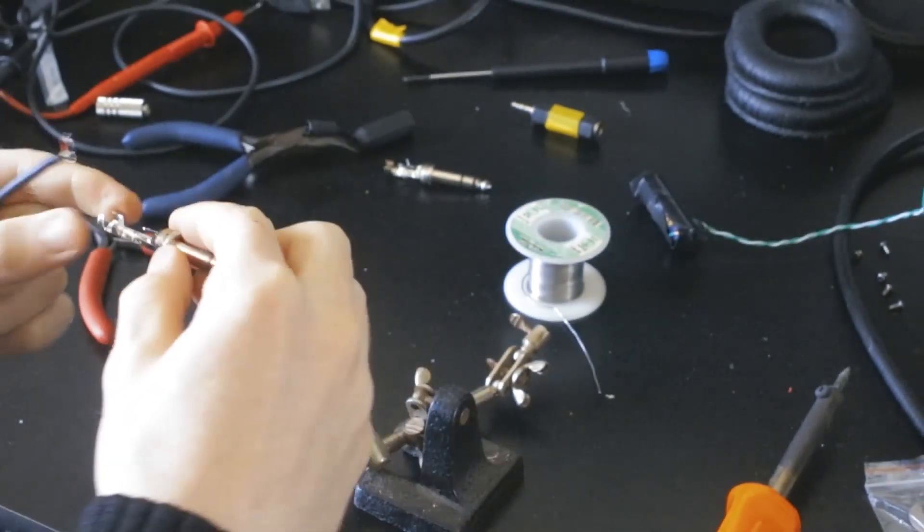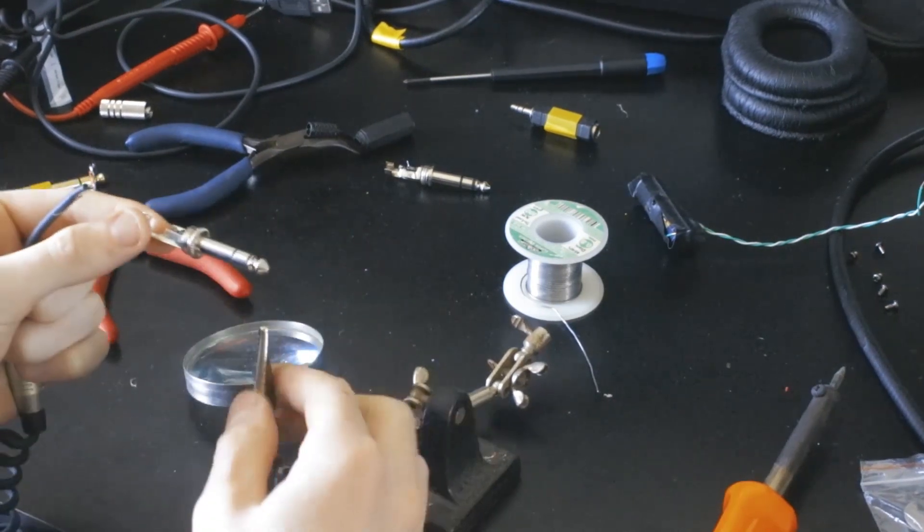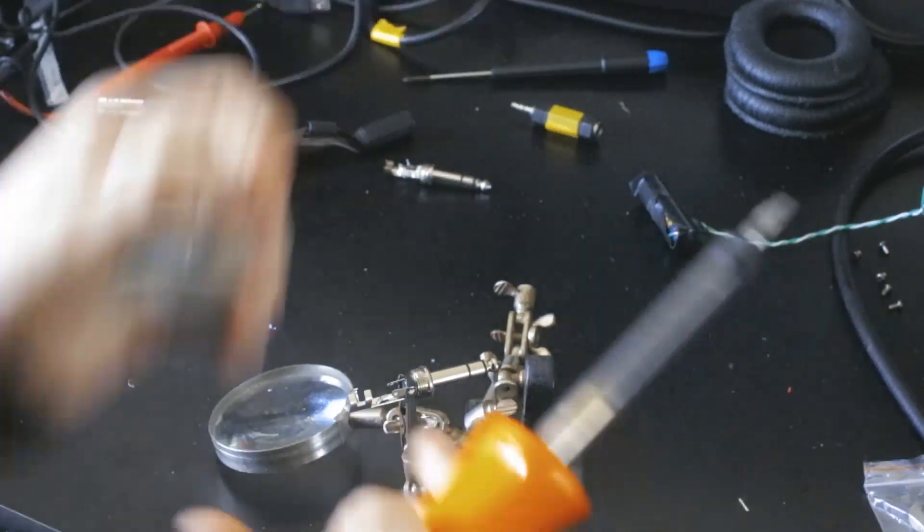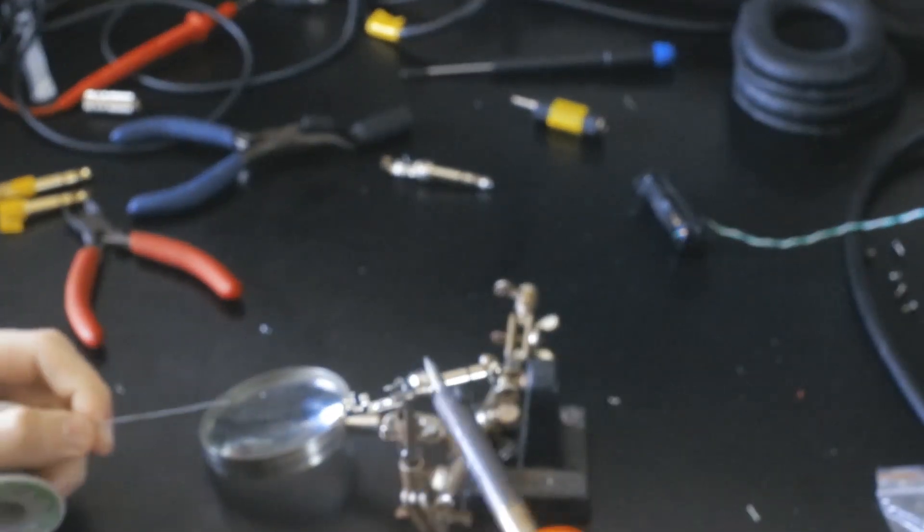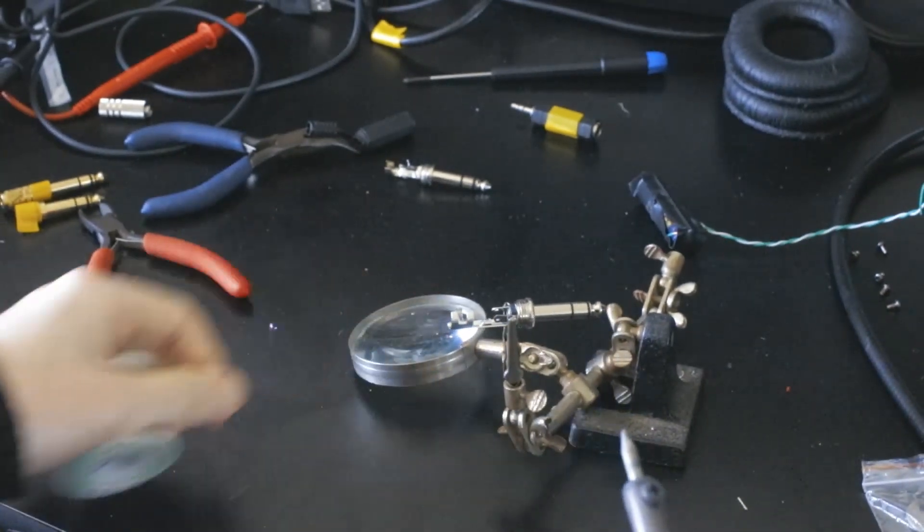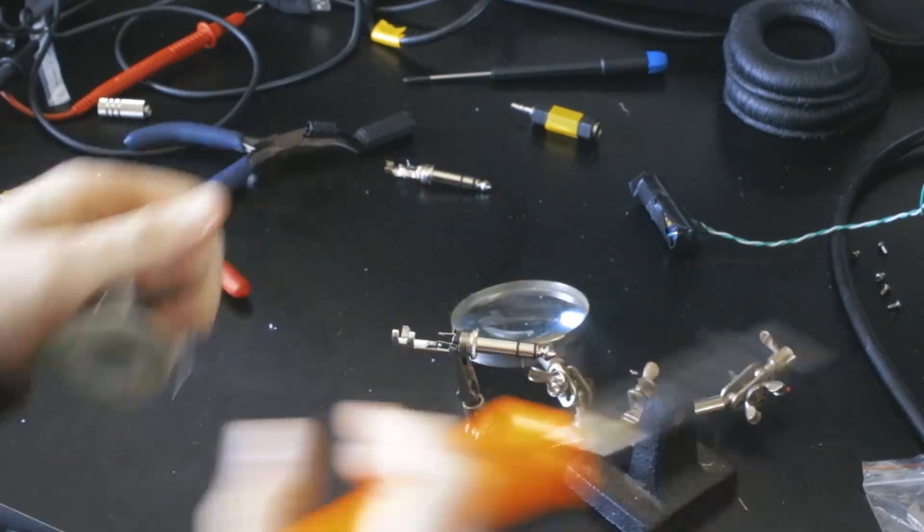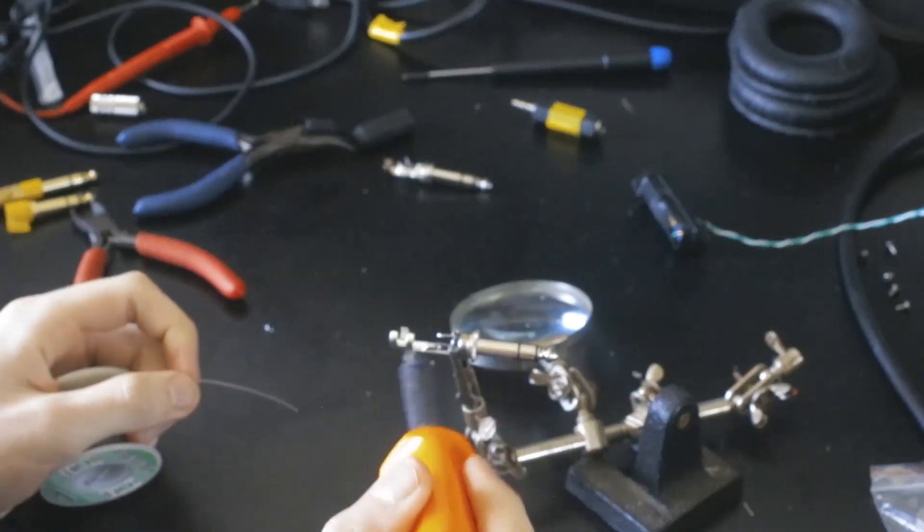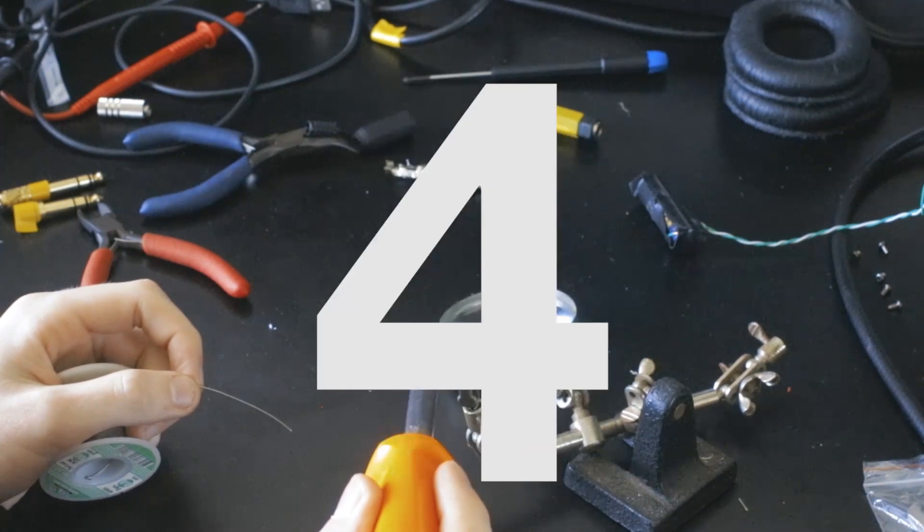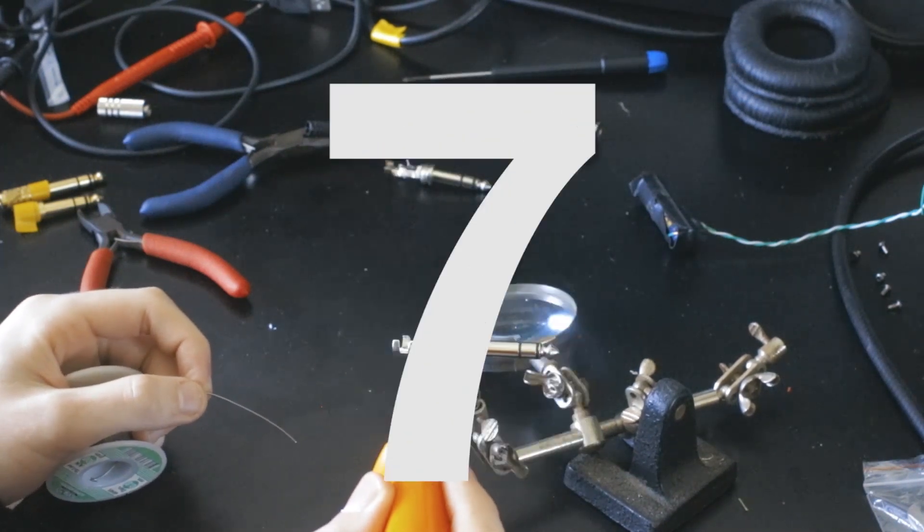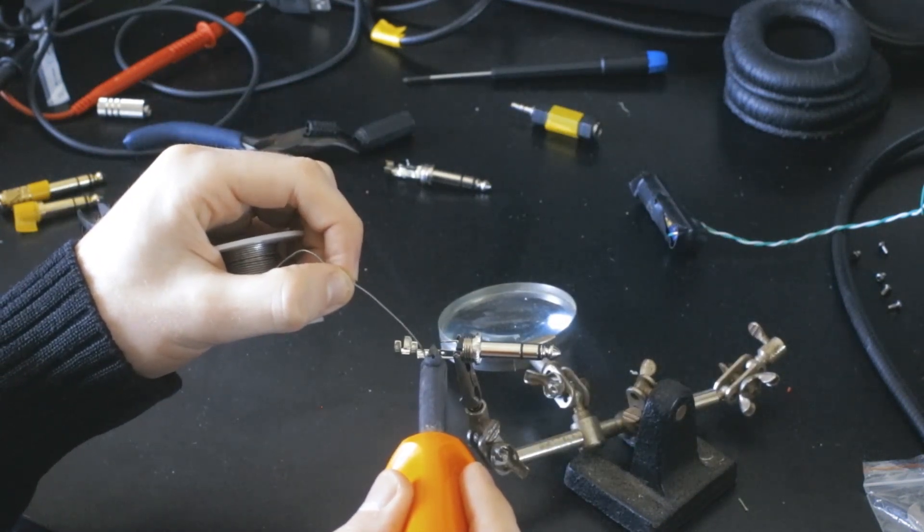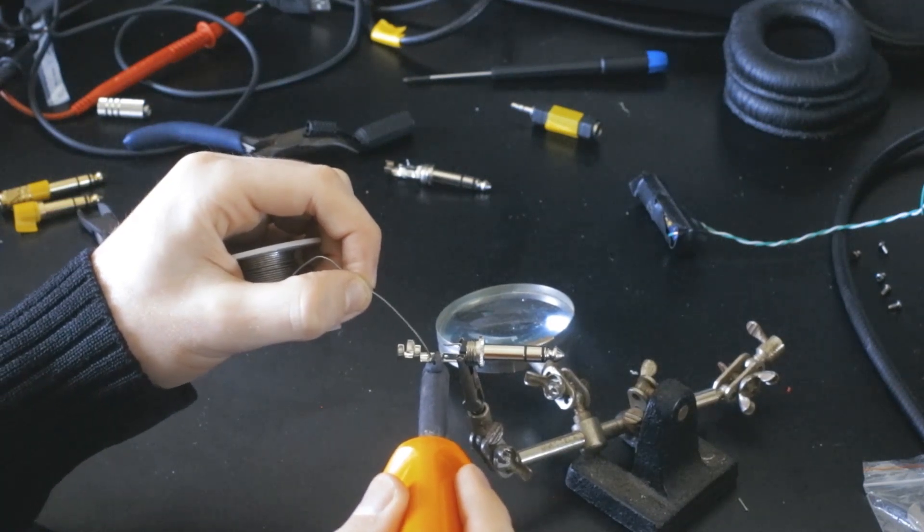Okay, soldering a connection. Put our connector in some hands. If you don't have hands, get a friend. Add the heat, count to ten: one, two, three, four, five, six, seven, eight, nine, ten. Add the solder. Don't add the solder onto the soldering iron, add it onto the thing that you just heated up.